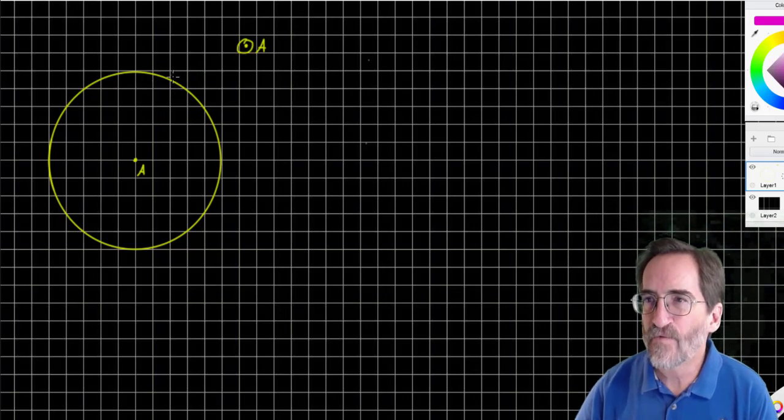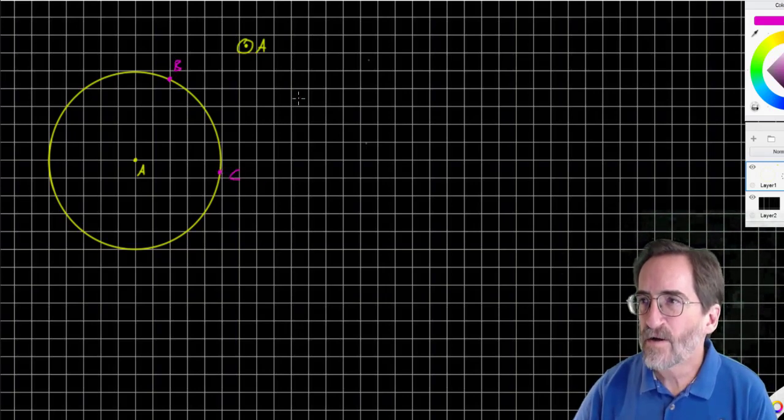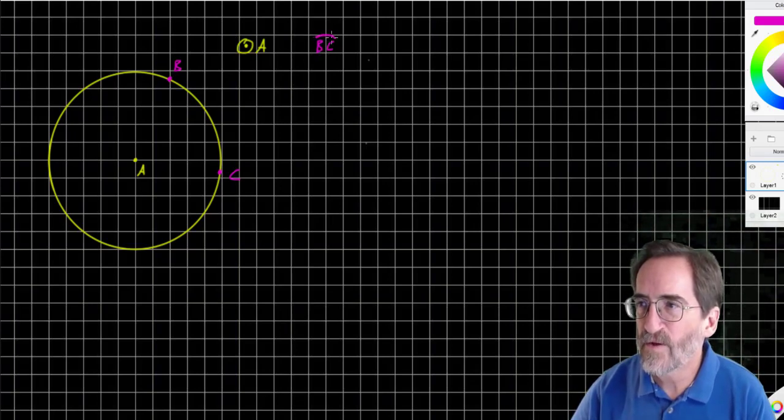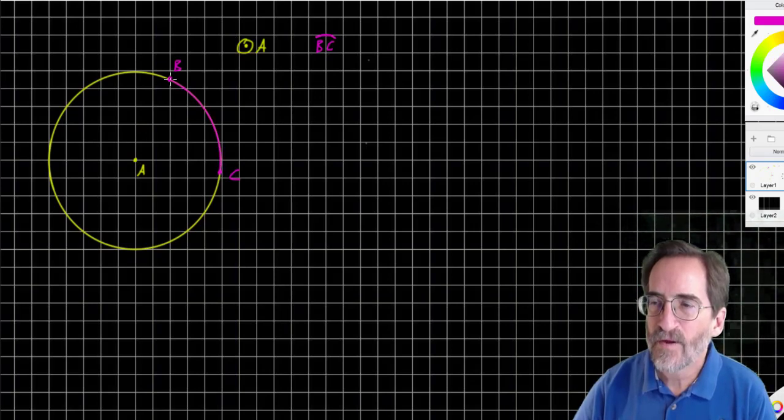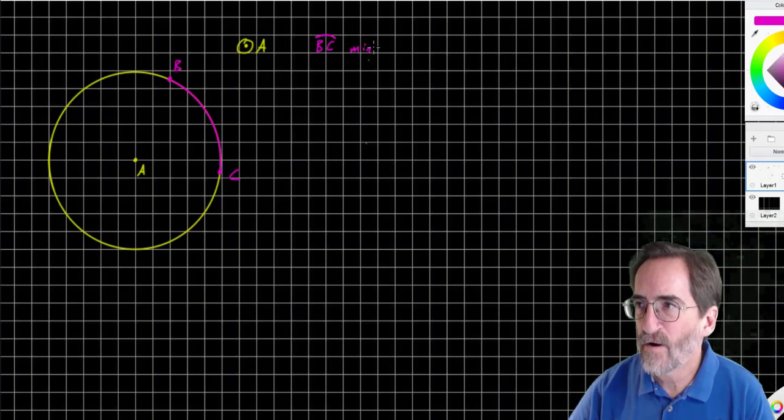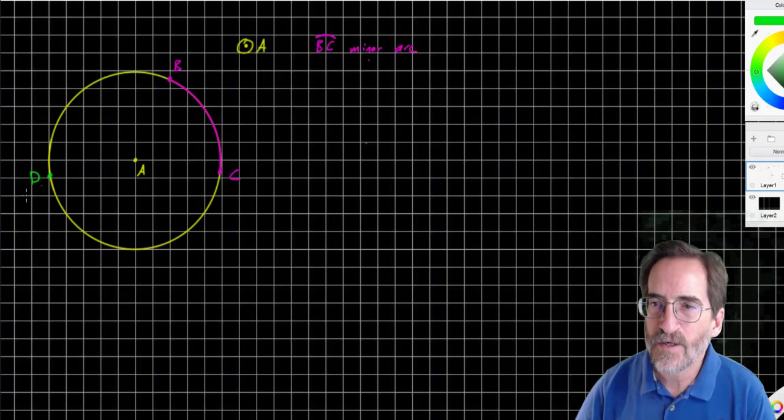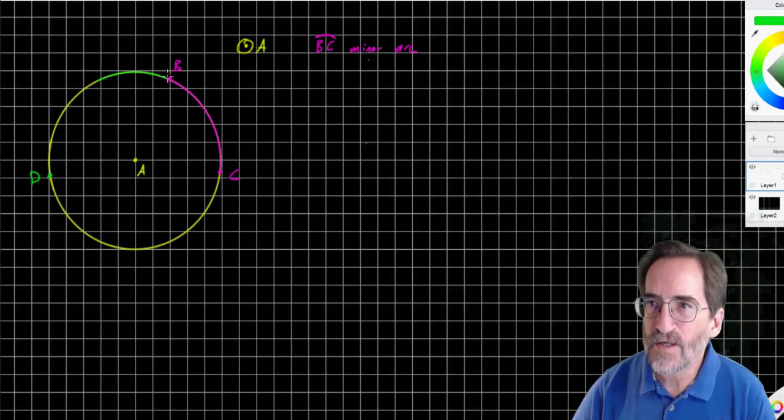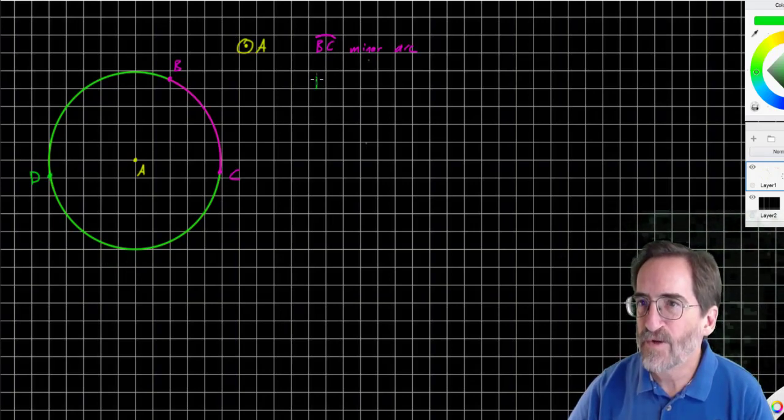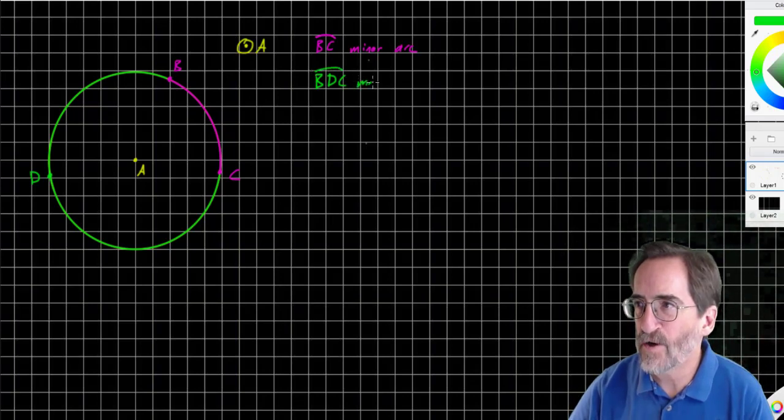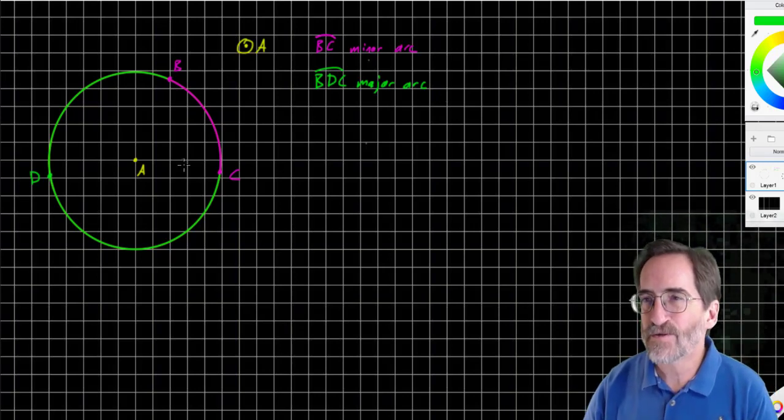Today we're talking about arcs and chords. Let's define an arc first. If I take two points B and C, then arc BC with a curve above it is defined as the portion of the circle between B and C. That's called a minor arc. If I want a major arc, I pick another point on the circle, let's call this D, and go from B through D to C. A major arc requires that I use three points. Arc BDC is a major arc.